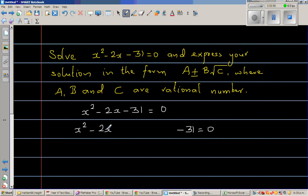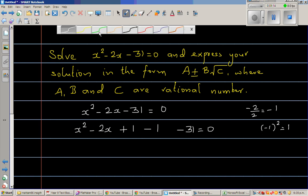So what I do is, first thing that you do is half of negative 2 is negative 1. And then you square negative 1, which is 1. So you are adding 1 and then immediately taking away 1. So what happens is this group, or this is a perfect square.